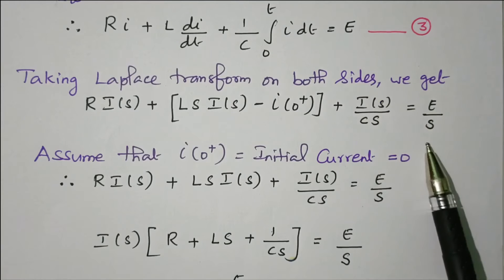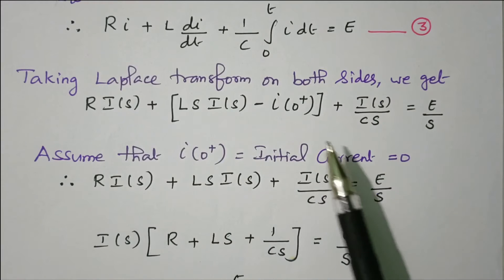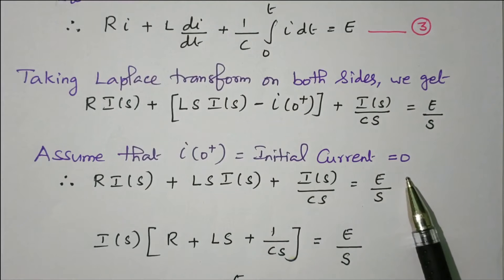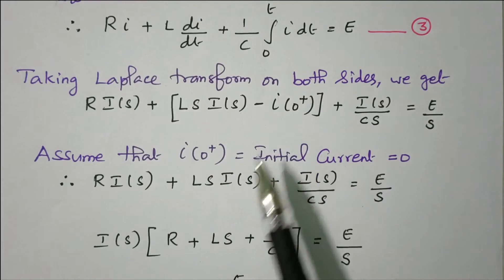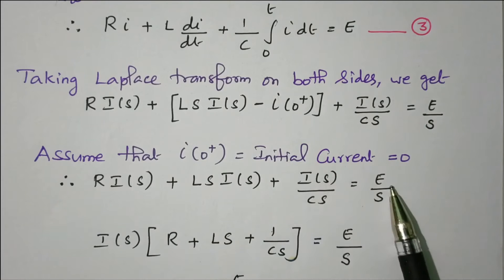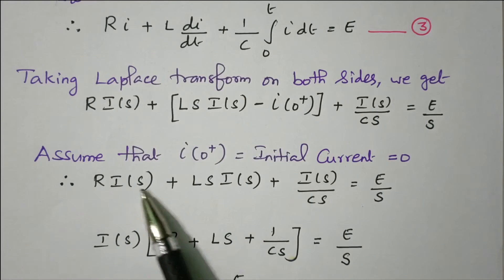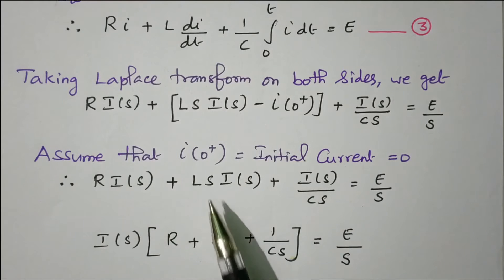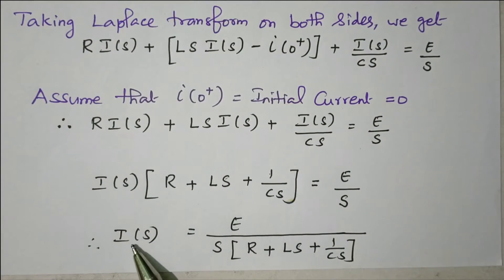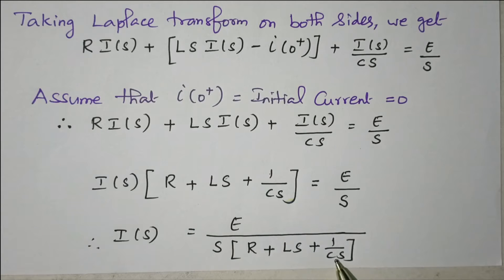The Laplace transform of E is E/S. Now assuming initial current I(0+) = 0 (no initial current) and initial charge = 0, that term becomes zero. So we have R·I(S) + L·S·I(S) + I(S)/(CS) = E/S. Taking I(S) common: I(S)·[R + LS + 1/(CS)] = E/S. Bringing the bracket to the denominator gives I(S) = E / {S·[R + LS + 1/(CS)]}.